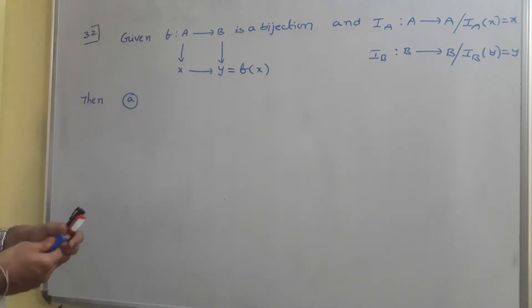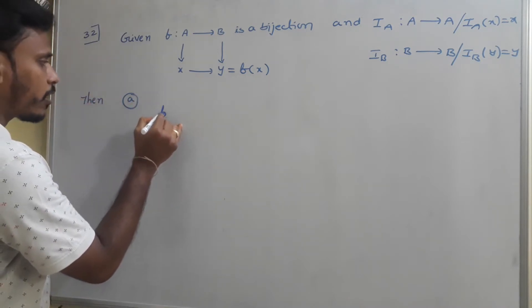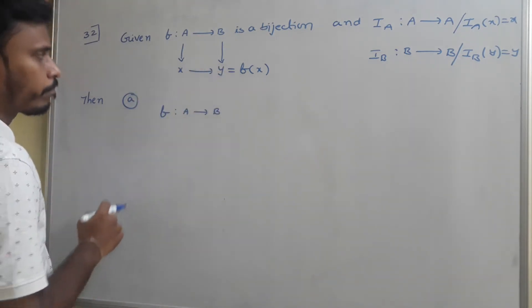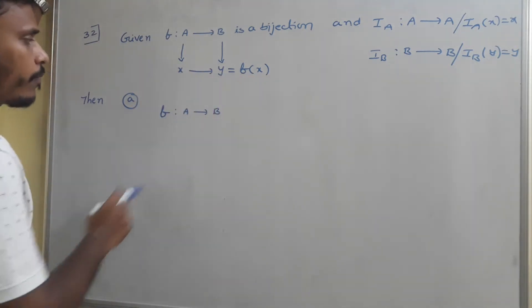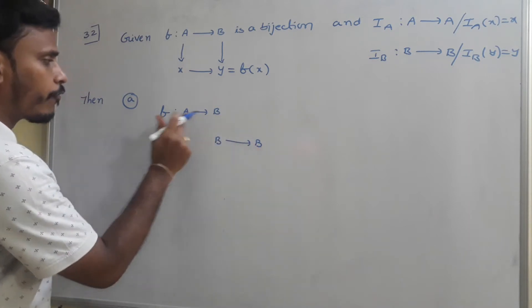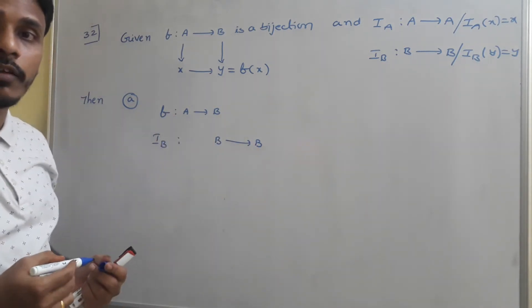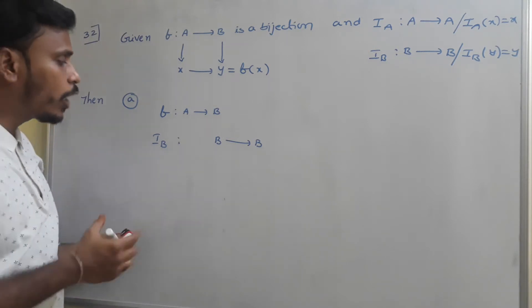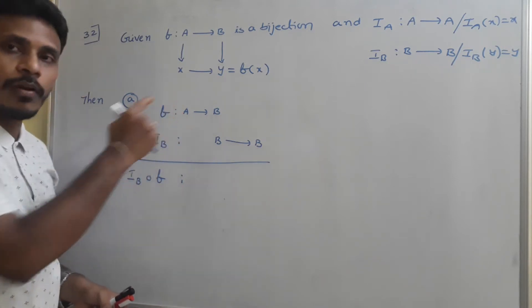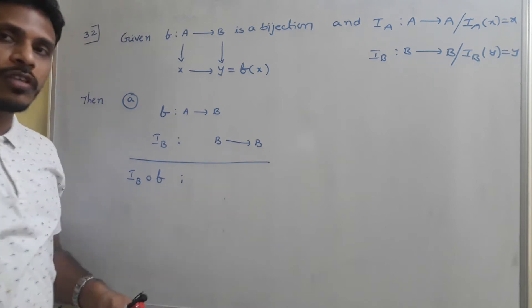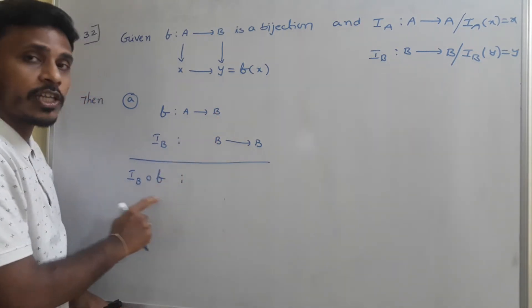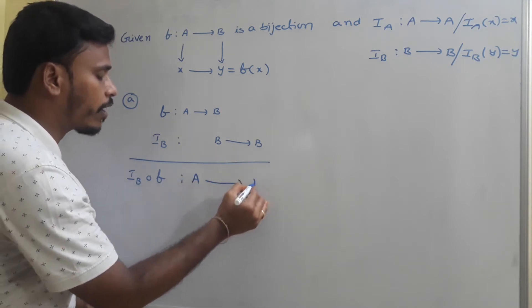Now, the first thing I am going to discuss: f is a function from A to B, where x maps to y = f(x). iB is a function from B to B. And we need to think about iB ∘ f. f is a function from A to B and iB is a function from B to B. Since the codomain of f and the domain of iB are the same, there is a chance to define iB ∘ f, and this iB ∘ f is again a function from A to B.